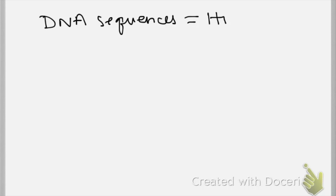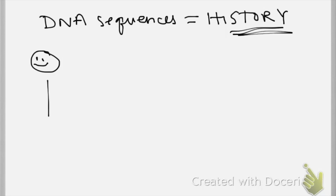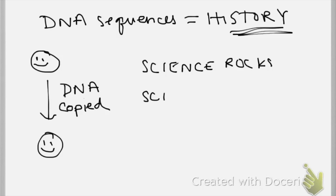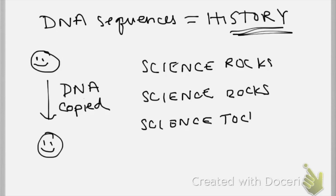Here's what's neat about DNA sequences: they're like history books. They document changes that have occurred in species over time and can be used to tell a story about relationships between different forms of life. Every time DNA passes from parent to offspring, it gets copied. And when it gets copied, mistakes might be made — just like I might make a mistake in copying a simple phrase if I had to do it over and over again. How often does this happen?